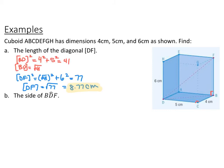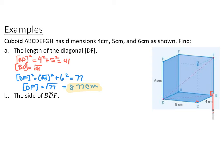First, I found the diagonal BD so I could use the right triangle FBD. In right triangle BDC, with a right angle at C and sides 4 and 5 centimeters, I found the hypotenuse BD using the Pythagorean theorem: BD equals the square root of 41. Then in triangle FBD, we're finding diagonal DF as the hypotenuse, with a right angle at B. One leg is the square root of 41 and the other leg is 6 — the height. Applying the Pythagorean theorem again gives diagonal DF as 8.77 centimeters.